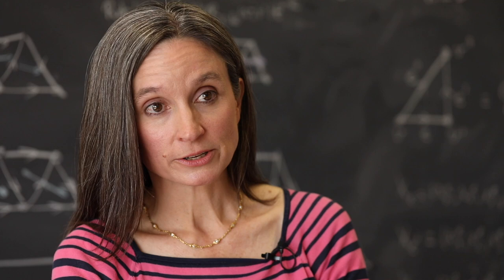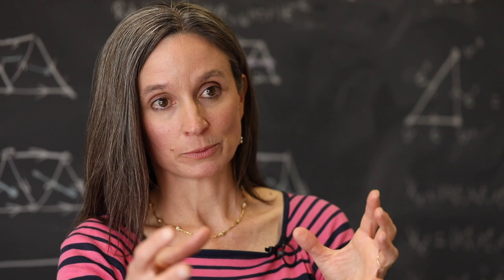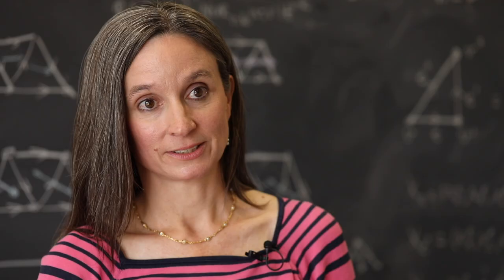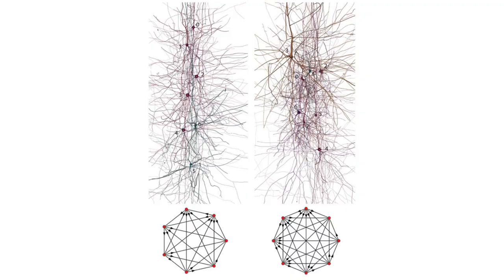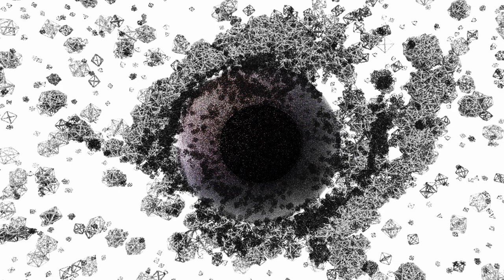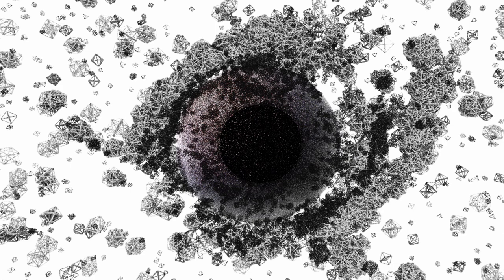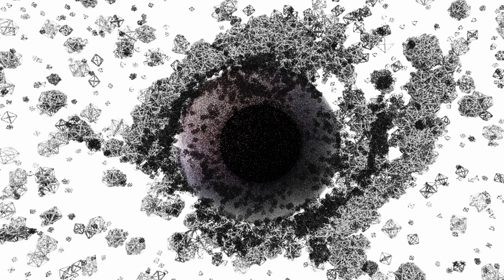And what algebraic topology enables us to do is to describe that encoding process and perhaps even to visualize the moment at which the brain is making a decision. There are more and more intricate structures among these neurons that are building up as it's thinking about and processing the information.